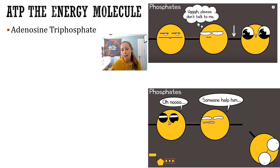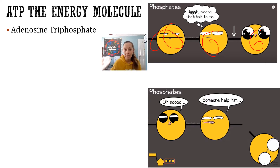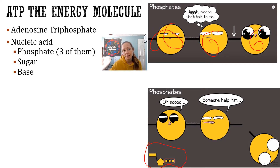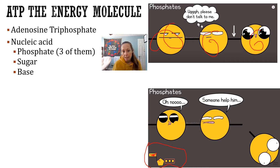ATP stands for adenosine triphosphate. When you look at this picture, these little circles are your three phosphate molecules. The rest of the ATP molecule is on the other side — it kind of looks like a nitrogenous base from DNA because they're all nucleic acids. So this is a nucleic acid: it has a phosphate, a sugar, and then a base, plus those three phosphates.